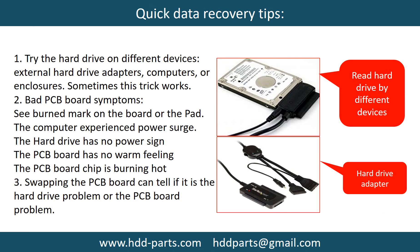There are some simple ways to recover data from a hard drive. One of them is to try to read the hard drive by different devices, like different external hard drive adapters, computers, or enclosures, because different devices use different ways to read a hard drive — sometimes this trick works. Another way is swapping the hard drive PCB board, which can fix the problem caused by the PCB board. There is a cost in swapping the PCB board, but it is way cheaper than sending the hard drive to a data recovery firm.